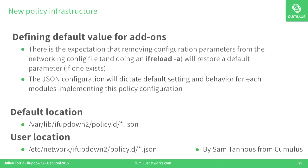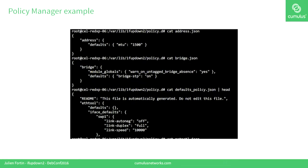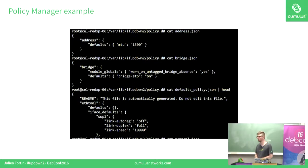The new policy infrastructure lets users define default values for add-ons. It also lets users define values to override system defaults and set specific behaviors for each add-on. Most of the add-ons support it now and we're working on moving all of them to comply with this new policy infrastructure. It was written by Sam Tanners from Cumulus. The policy files are written in JSON — for example, you can specify that the default MTU will always be 1500 if not specified, and that bridge STP will always be on.